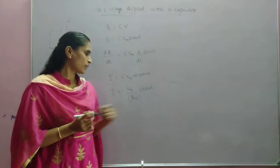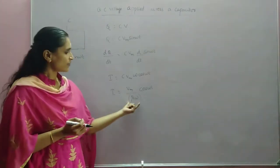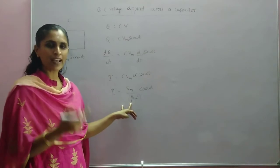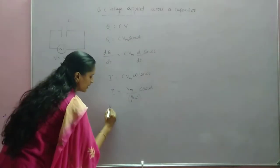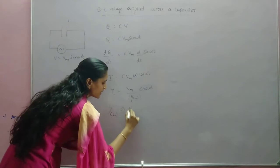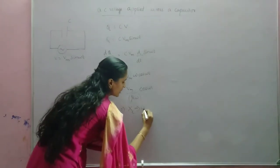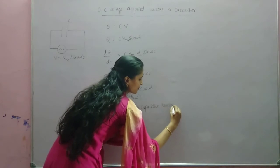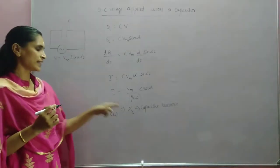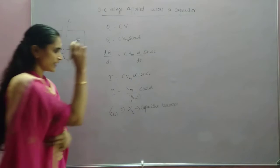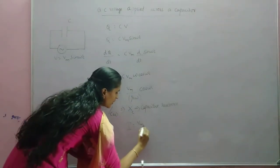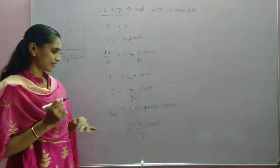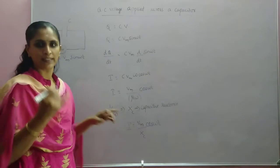Since dQ/dt equals the instantaneous current I, we can write I equals CVm ω cos(ωt), which can be rewritten as I equals Vm divided by (1/Cω) times cos(ωt). Here 1/Cω plays the same role as resistance — but here we call it capacitive reactance, represented as XC. So XC equals 1/Cω and Vm/XC is the peak value of current Im.